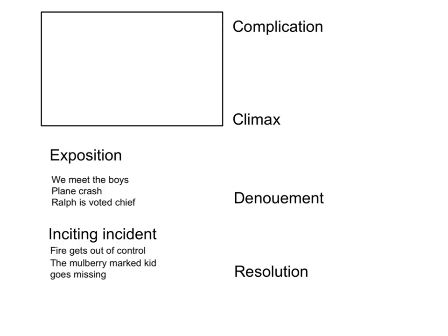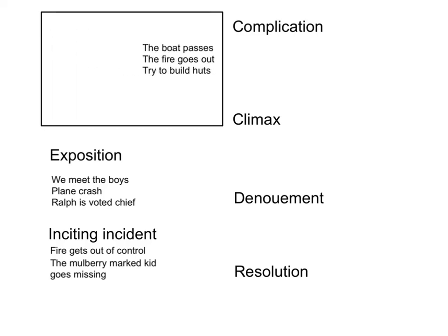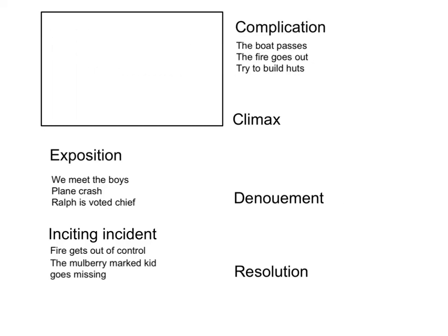The complication is everything that follows until the storm and the death of Simon. Things in the complication include: a boat passes and the fire goes out, and the boys try to build huts. Make sure you look over the complication — there are some general bits of information there.